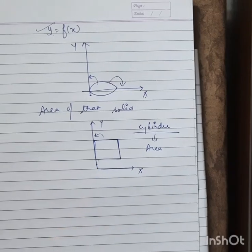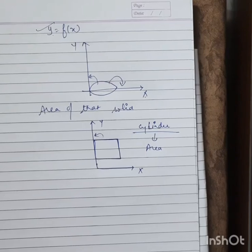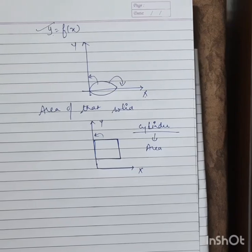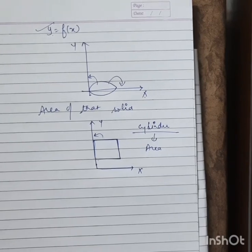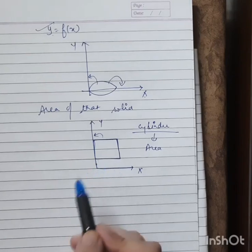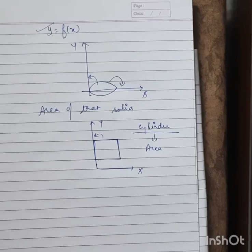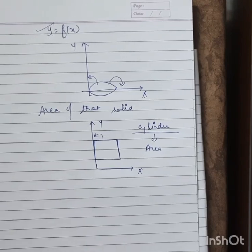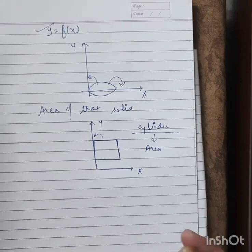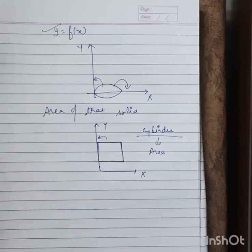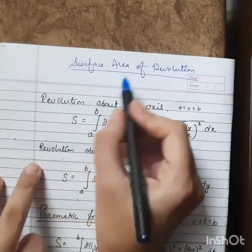When you revolve a square around the y-axis, you experience the shape of a cylinder. In this application of definite integrals, we learn how to calculate the area of that new shape formed. I can share a separate video showing in three dimensions how shapes are formed when we revolve curves around the x-axis, y-axis, or any other axis. In this video, we focus on the numerical part. Like the previous topic on length of curve, we will have a list of formulas depending upon the type of equation of the curve given. The first one is Cartesian form.